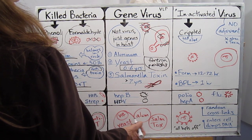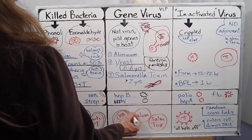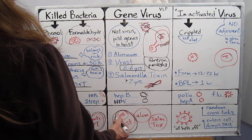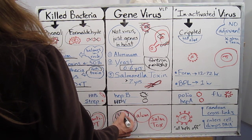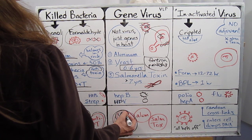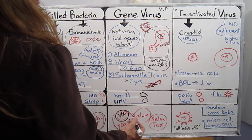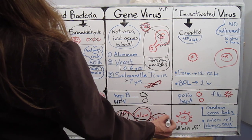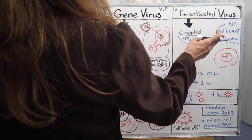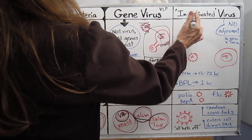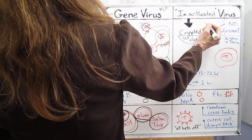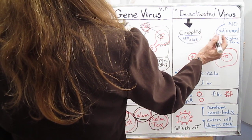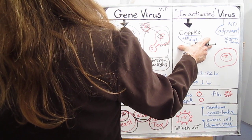Here's a diagram of what's going on: you've got the yeast molecules, inside of which are the virus proteins excreted by the ground-up yeast. They've attached it to the aluminum adjuvant and salmonella toxin. The inactivated virus is literally inactivated but crippled — it needs no adjuvant because it is still alive.